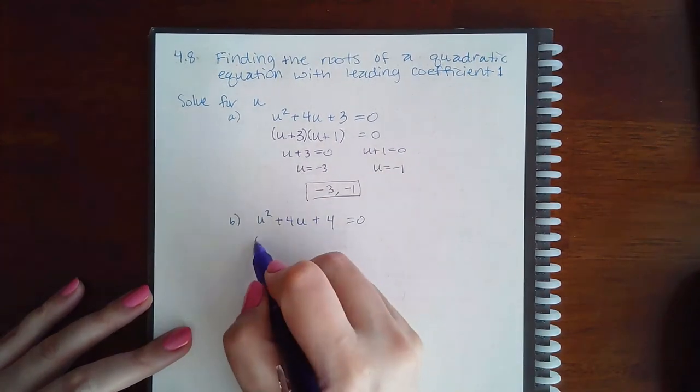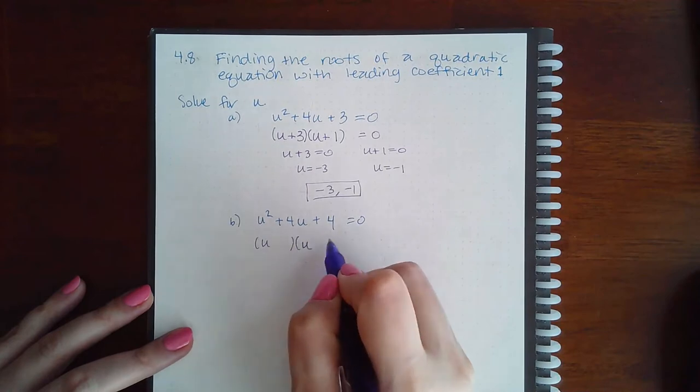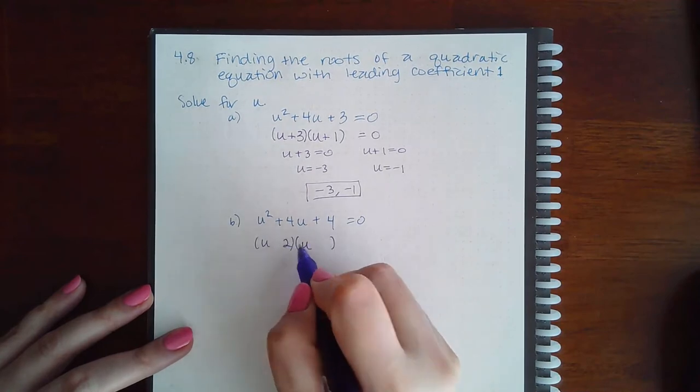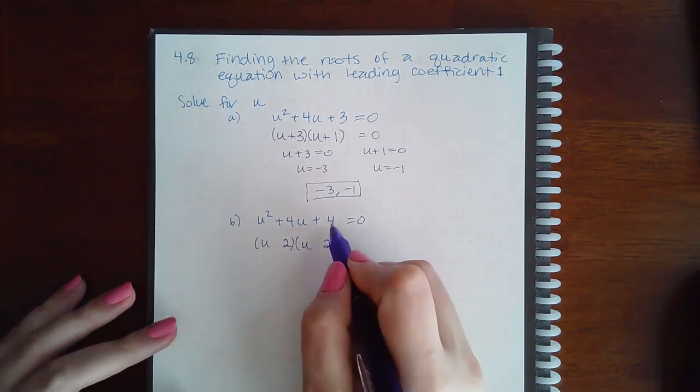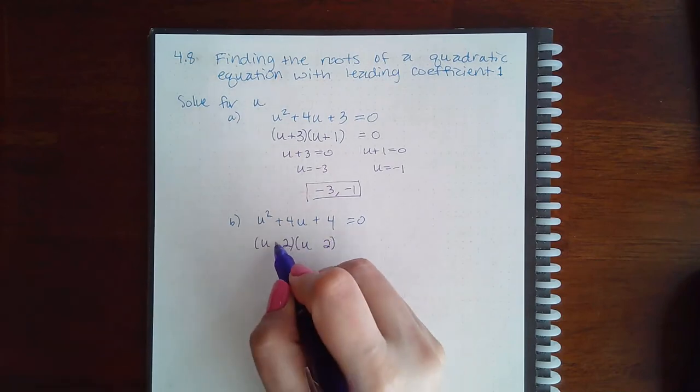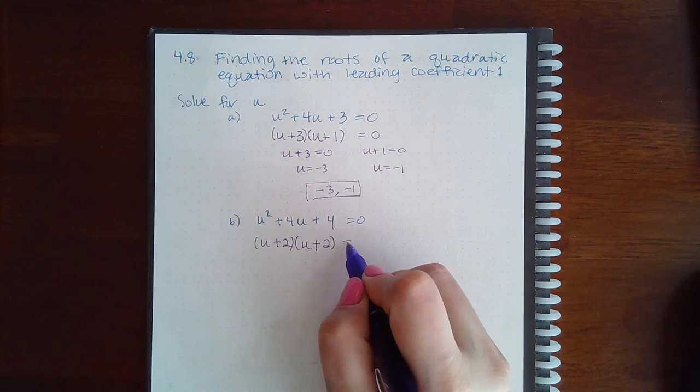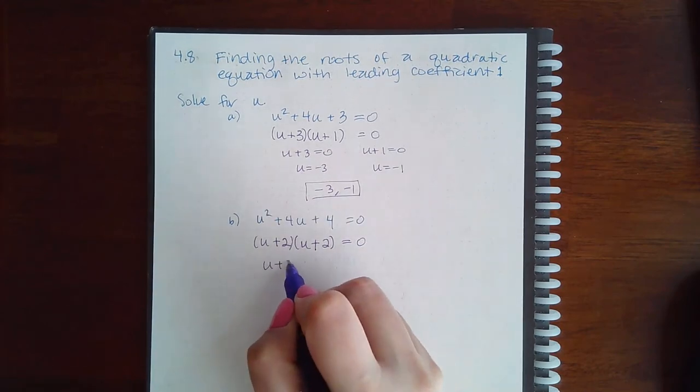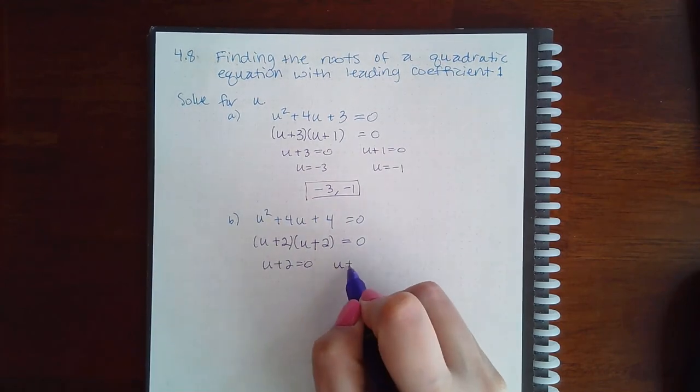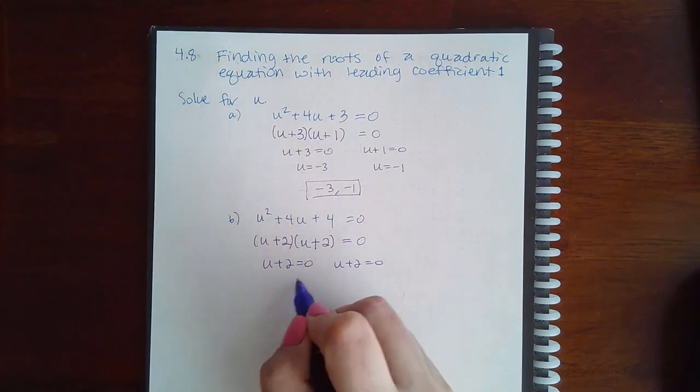Similarly here, I could use the shortcut and factor this: u and u. 2 plus 2 multiplies to give me 4 and adds to give me 4, so I would have positive and positive. Then if I set each one of these equal to 0...